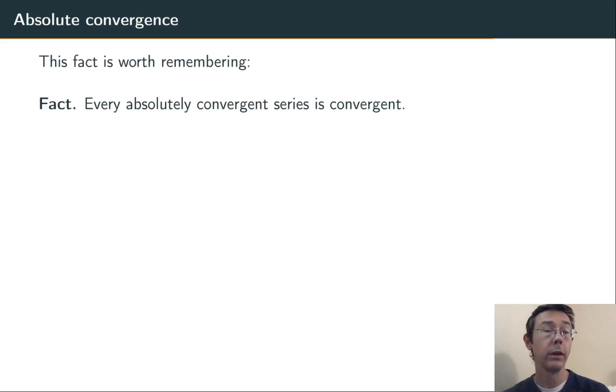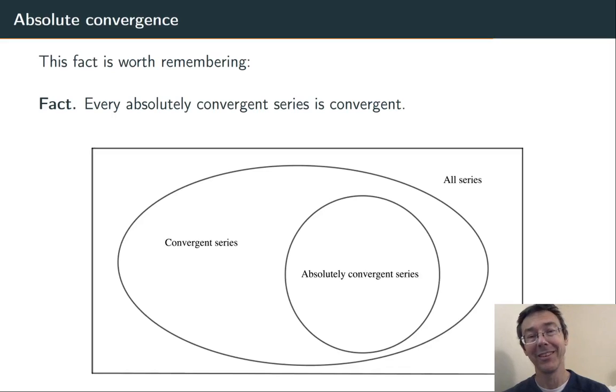This is a really important fact. If a series converges absolutely, then it converges. This gives us a sort of Venn diagram. On the outermost box, we have all series, and then within that, convergent series, and then within that, absolutely convergent series. So every absolutely convergent series is a convergent series, and obviously every convergent series is a series.